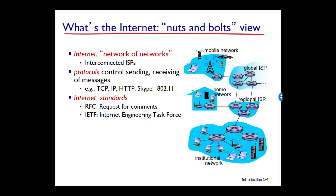End systems, packet switches, and other pieces of the Internet run protocols that control the sending and receiving of information within the Internet. The Transmission Control Protocol, usually referred to as TCP, and the Internet Protocol, usually referred to as IP, are two of the most important protocols in the Internet. The IP protocol specifies the format of packets that are sent and received among routers and end systems. The Internet's principal protocols are collectively known as TCP/IP.